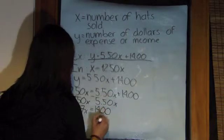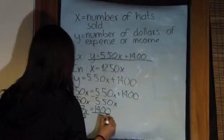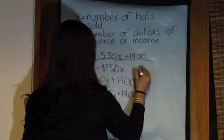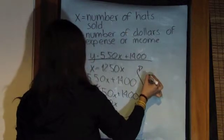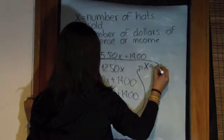To isolate the X, we need to divide by 7 on each side. So X is equal to 200.